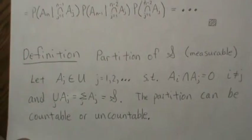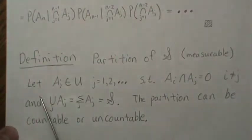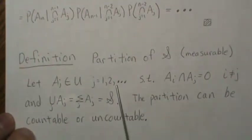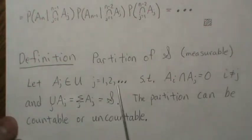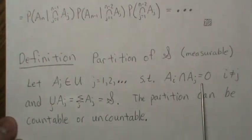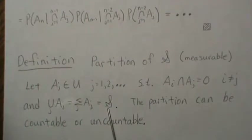Now let's look at a definition: a partition of our sample space — specifically a measurable partition. If we let A_j be in the sigma field, countable or uncountable, finite or infinite, such that they are all disjoint — no intersection between them — and their union gives back the sample space, then {A_j} is called a partition.